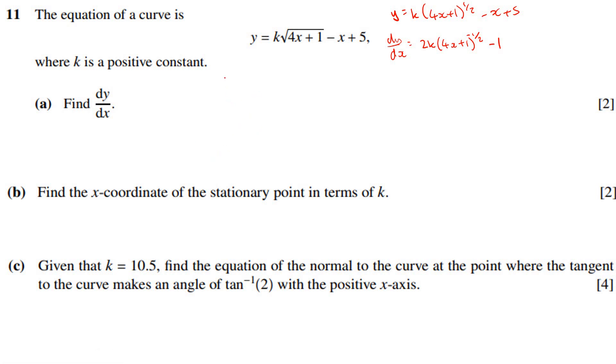Next, it says find the x-coordinate of the stationary point in terms of k, so that will happen when dy by dx equals 0. So dy by dx equals 0 will mean that 2k, lots of 4x plus 1, all raised to the negative half, must equal 1. So if this equals 0, move the 1 over, you end up with this. Now, if you imagine this as being 2k over root of 4x plus 1, that will mean that you can give this as 2k equals the square root of 4x plus 1.